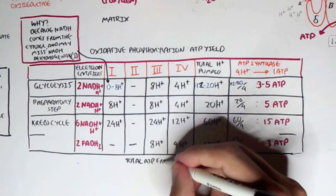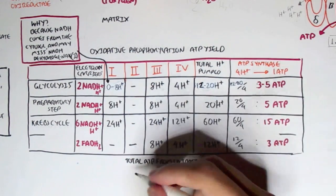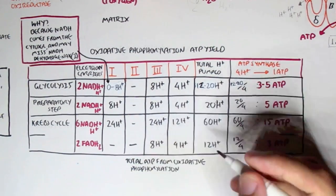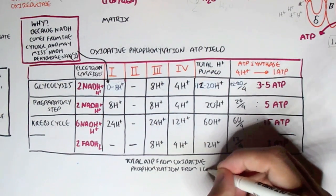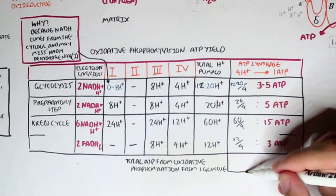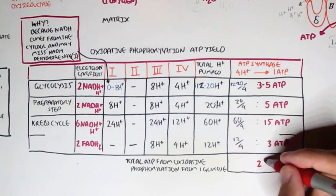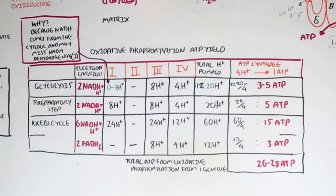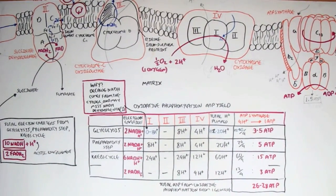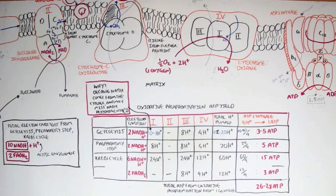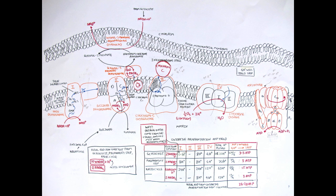Going back to the graph, the total ATP from oxidative phosphorylation produced from essentially one glucose molecule equates to 26 to 28 ATPs, depending on whether we use the glycerol-3-phosphate shuttle. It's worth noting that the electron transport chain and oxidative phosphorylation are not yet fully understood, so some details may still be subject to revision. Thank you for watching.